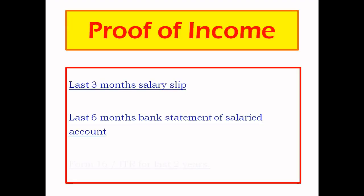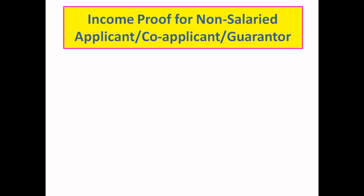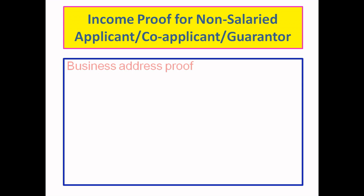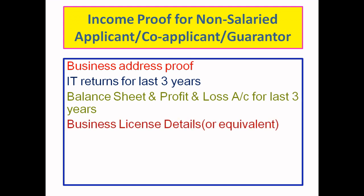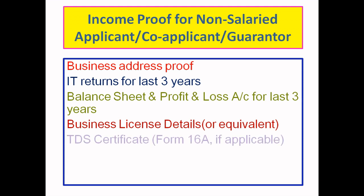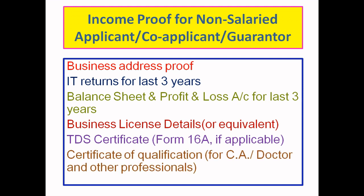For proof of income, salaried applicants need the last 3 months' salary slips, last 6 months' bank statement, and Form 16 Part A and Part B along with ITR (income tax return) for the last 2 years. For business or self-employed applicants, the documents include business address proof, income tax returns for the last 3 years, profit and loss account for the last 3 years, trade license, TDS certificate if applicable, and for professionals like doctors or lawyers, a qualification certificate.